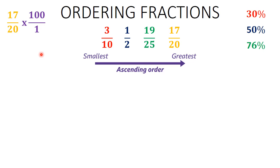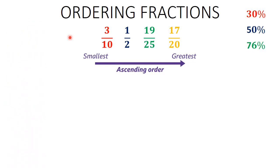Finally, 17 over 20: how many 20s are in 100? Since 2 times 5 equals 10, then 20 times 5 equals 100, so there are five 20s in 100. The fraction becomes 17 times 5 over 1, which gives 85. So 17 over 20 equals 85%.